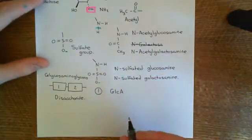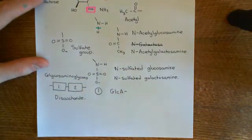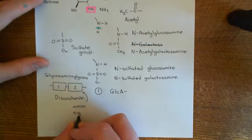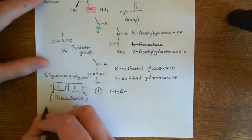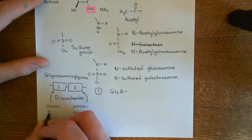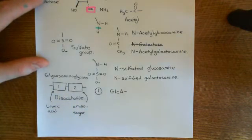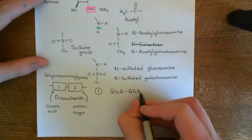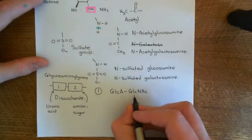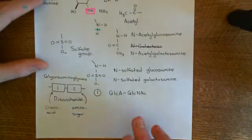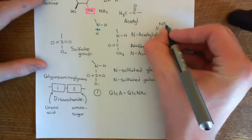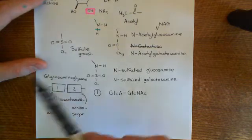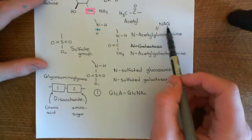In position one you put glucuronic acid, and then in position two you usually put an amino sugar. The general rule is that in position two you put an amino sugar, and in position one you put a uronic acid or galactose. The amino sugar you're going to have is glucose — GlcNAc — which is the abbreviation for N-acetyl glucosamine. You may well see another abbreviation used for N-acetyl glucosamine: it's often abbreviated to NAG, particularly when looking at peptidoglycan.